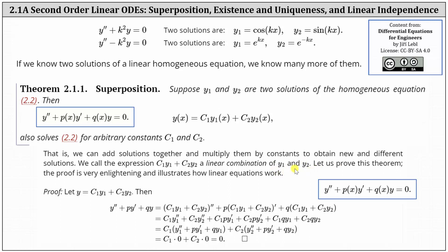Let's prove this linear combination does satisfy the second-order linear homogeneous equation shown in the blue box. First, we substitute the linear combination in for y, then find the first and second derivatives, shown in the second line. Next, we group the c₁ and c₂ terms together and factor out c₁ and c₂. Recall we already know that y₁ and y₂ are solutions, so y₁'' + p·y₁' + q·y₁ = 0 and y₂'' + p·y₂' + q·y₂ = 0. Simplifying, we have the proof that the linear combination of y₁ and y₂ does satisfy the second-order linear homogeneous differential equation.